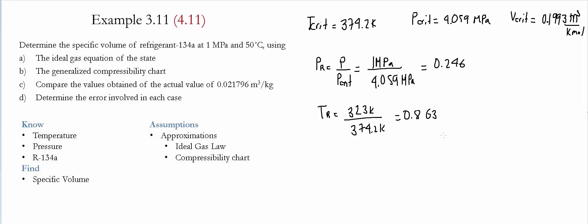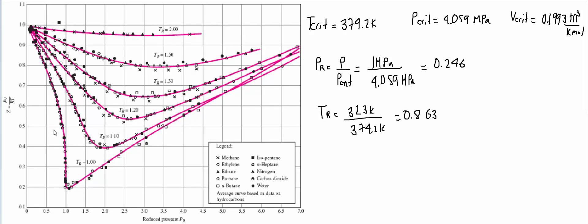Once we have the reduced values, we go to the compressibility chart to get the value of Z. Having the reduced pressure and temperature, we go to the compressibility table to get the compressibility factor. We go to the reduced pressure—notice that it's around 0.25, so it's somewhere around this point.